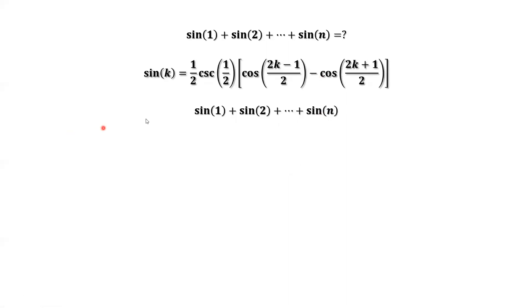Now we are ready to apply this result. Every term for k equals one, two, three until n, we have the first part. One half times cosecant of one half. We can factor this part out here.